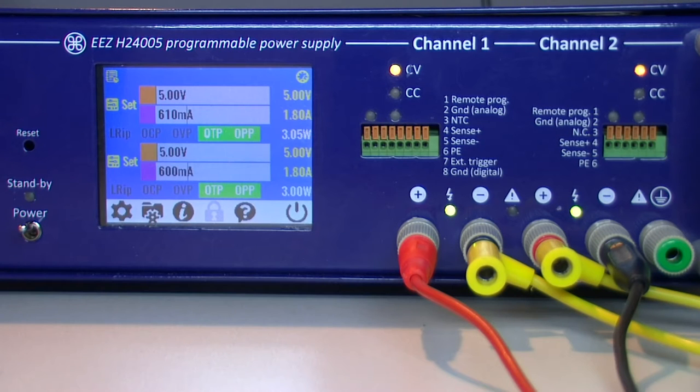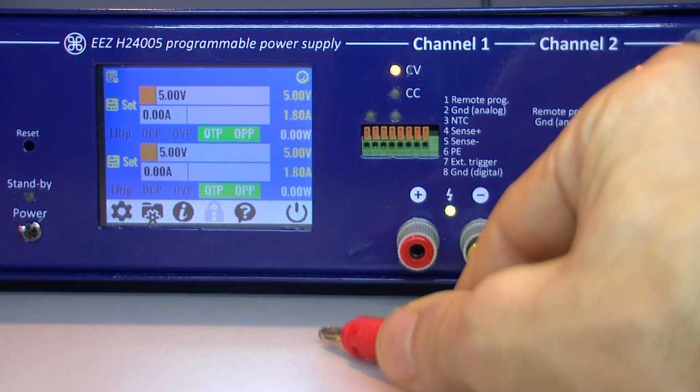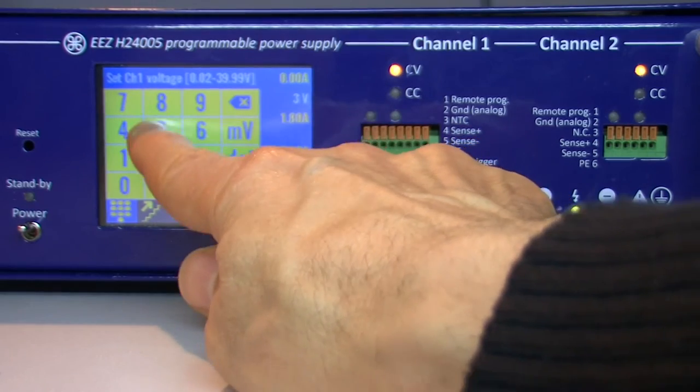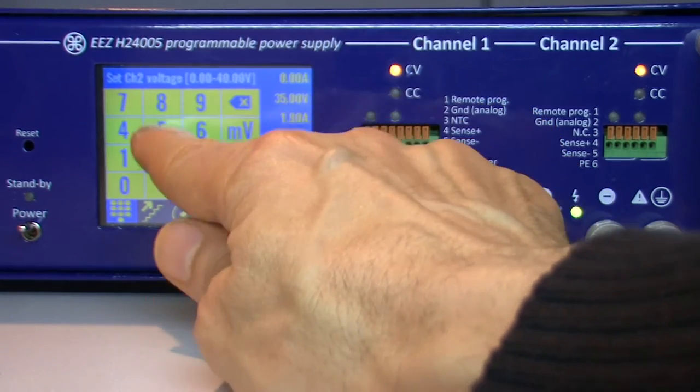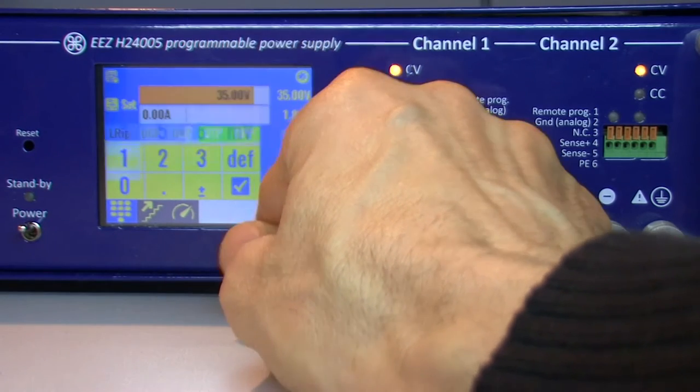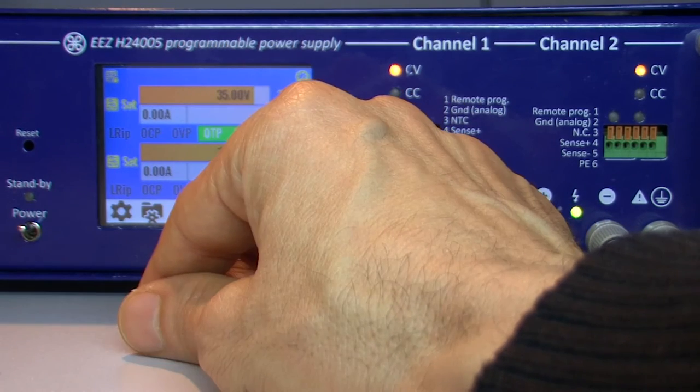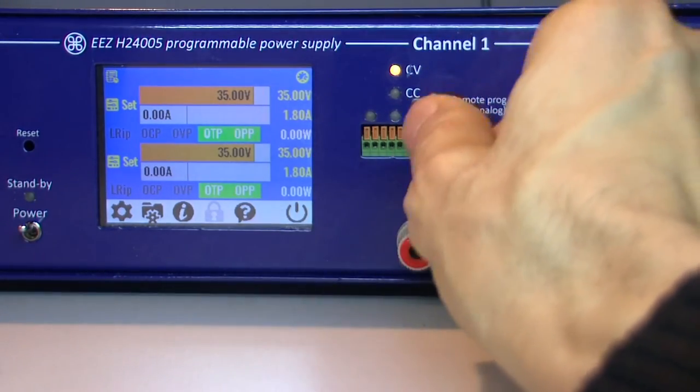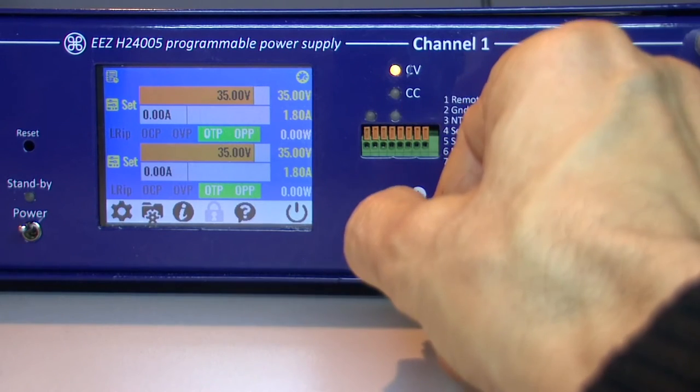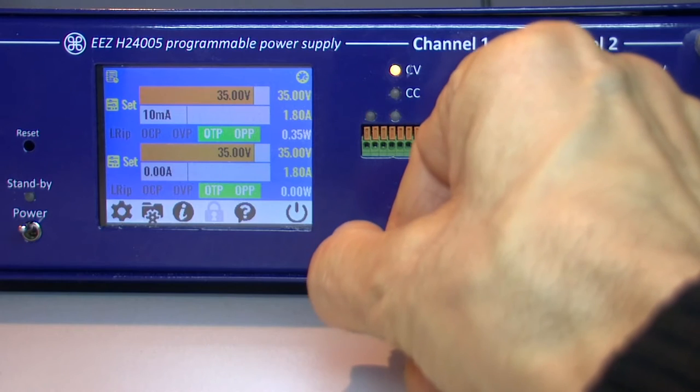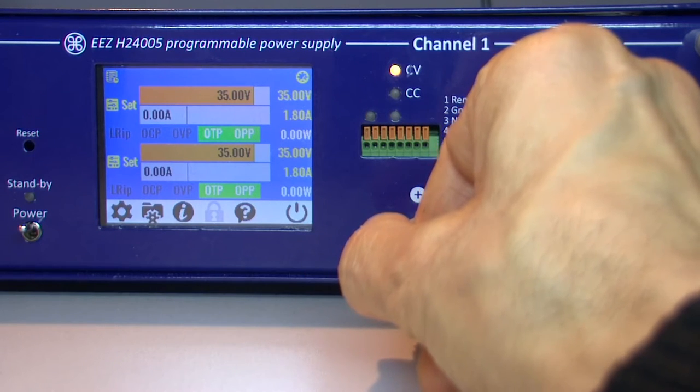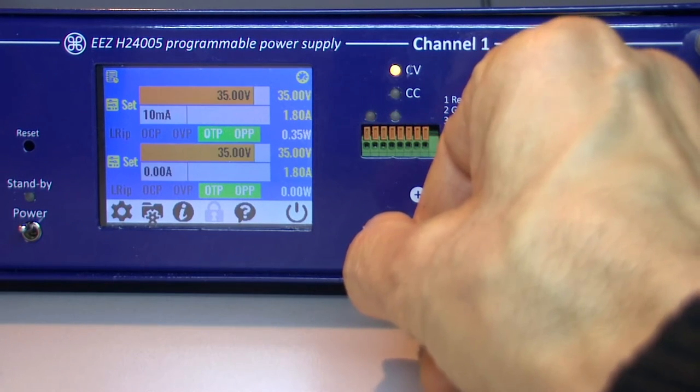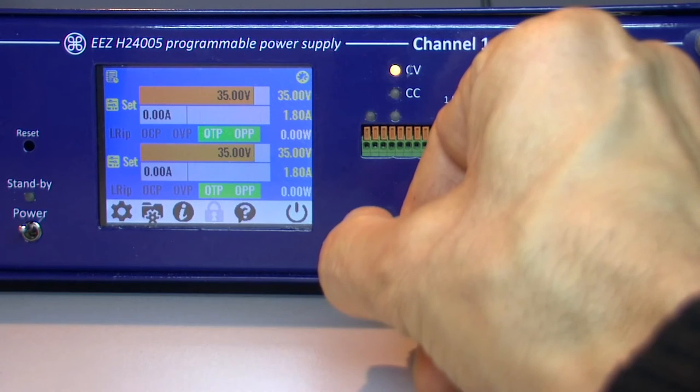And I will continue with a different scenario. First I will disconnect the load and I will set another voltage, this time something very high. In total it's 70 volts, and with the same load we will probably enter constant current mode of operation on both channels. Yes, but something else has also happened. We can see that output voltage is quite different on each channel. And not just that.